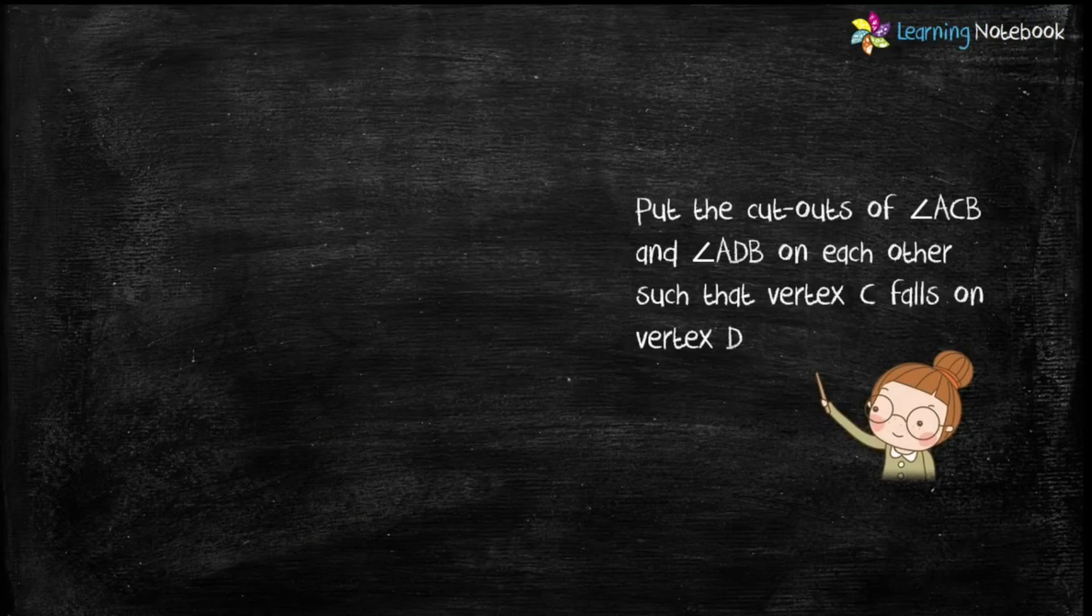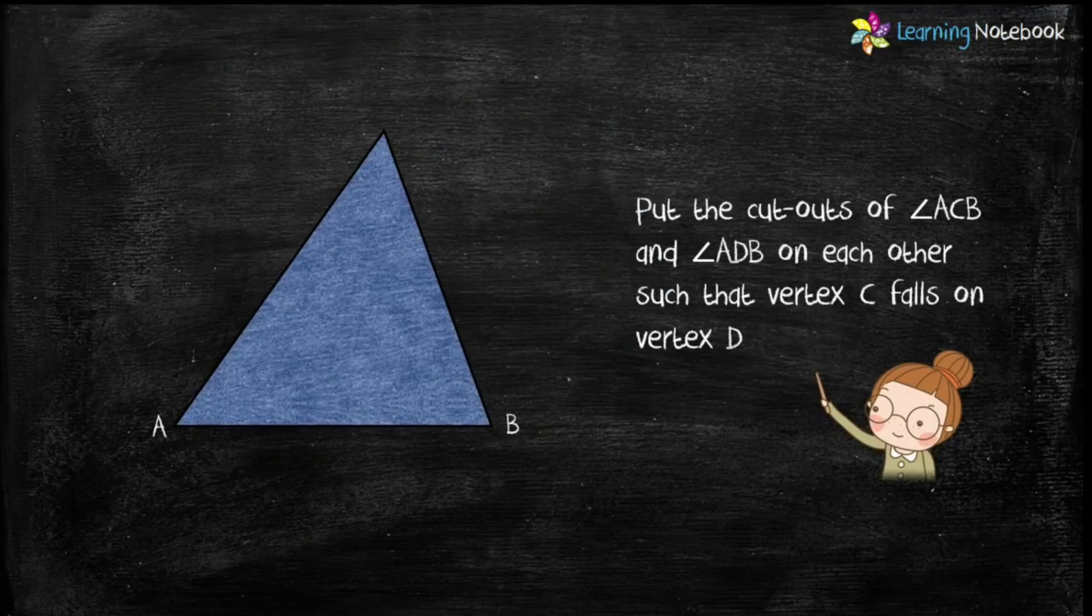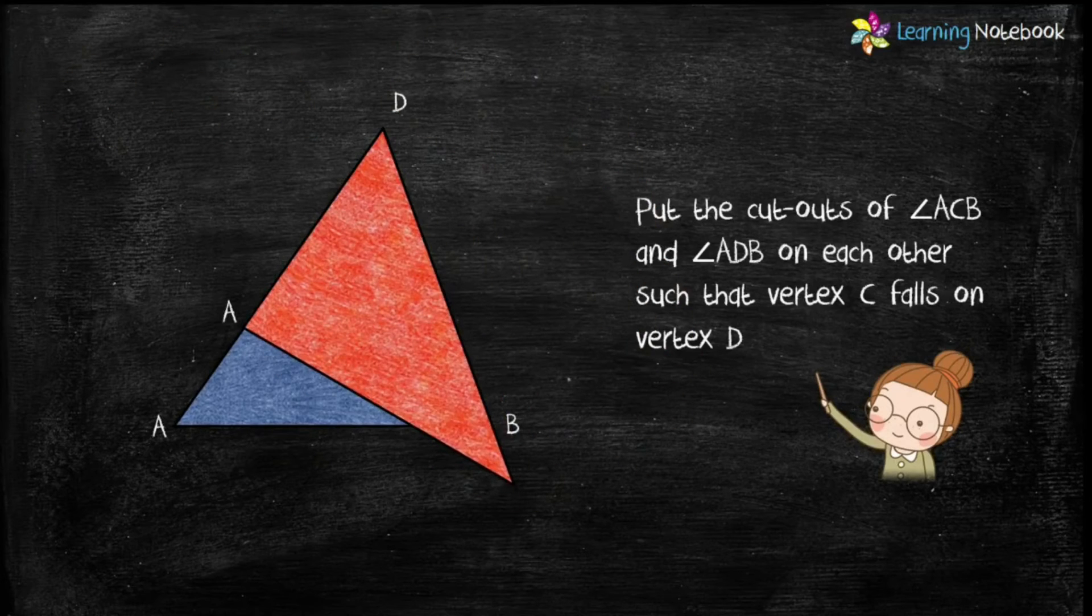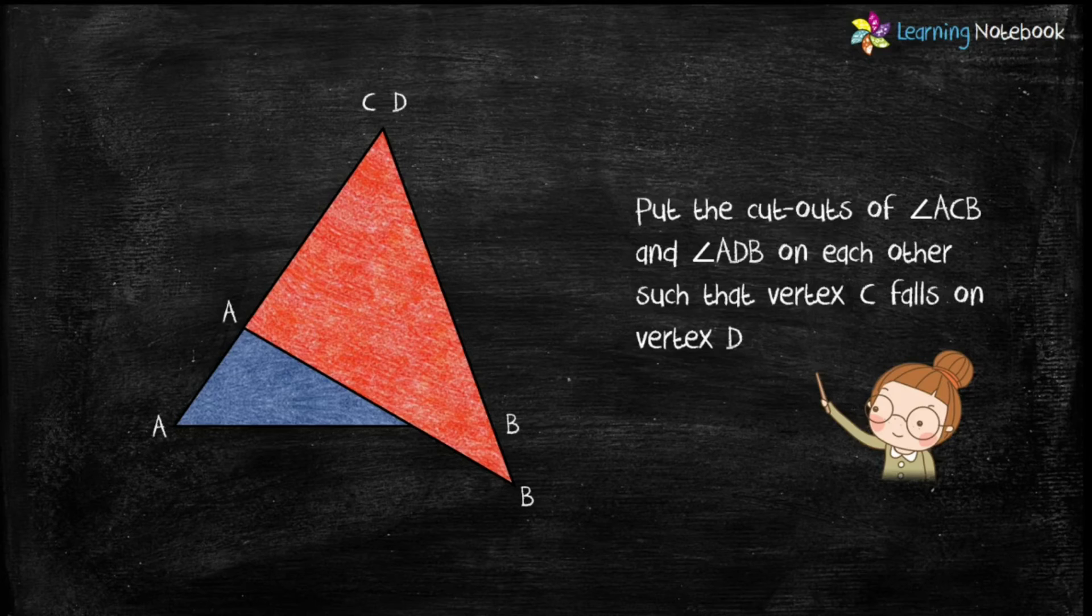Now students, put the cut out of both angles on each other such that vertex C falls on vertex D as shown here.